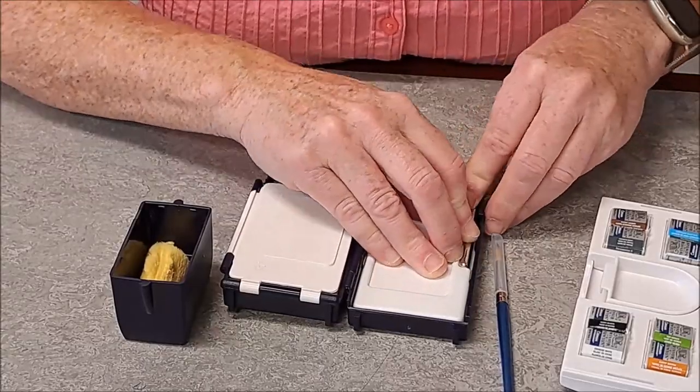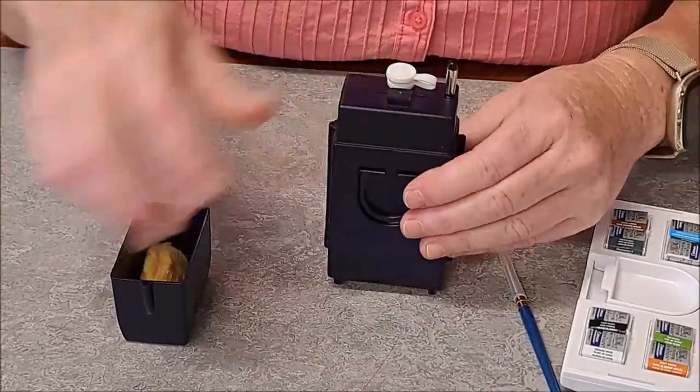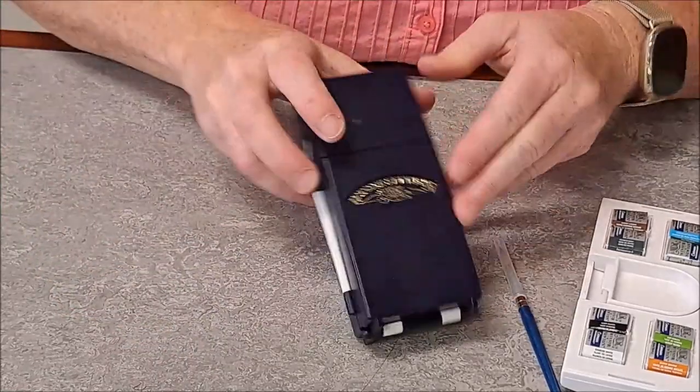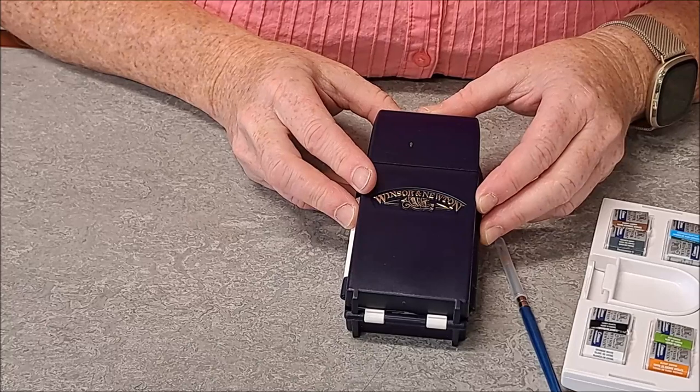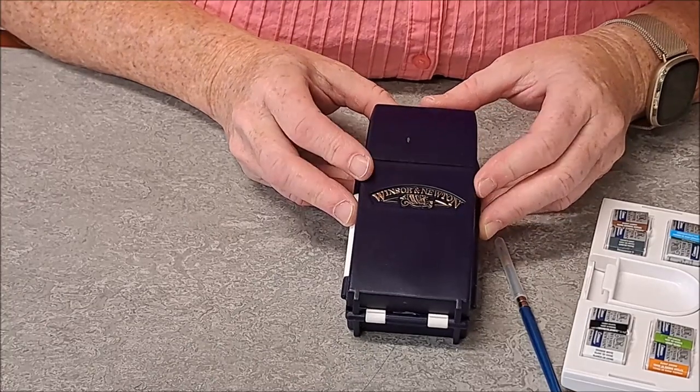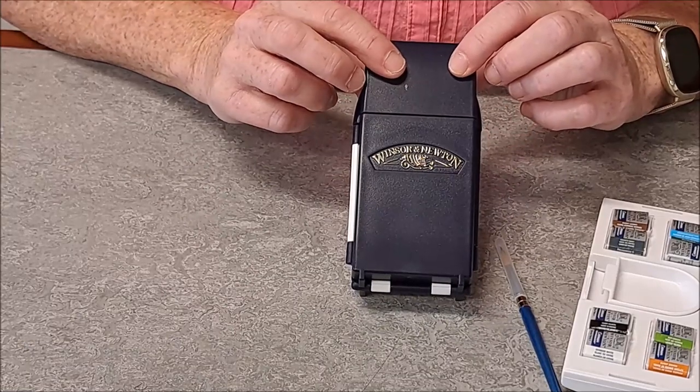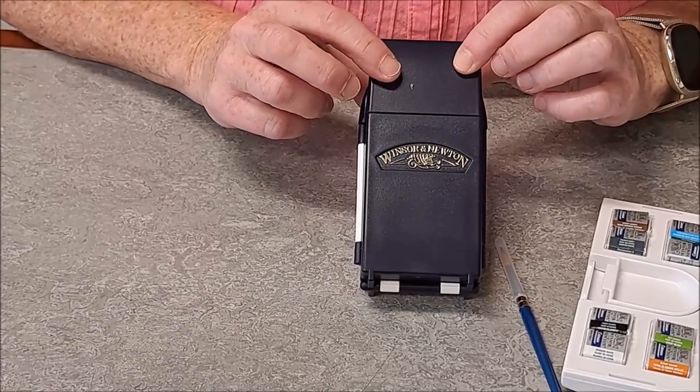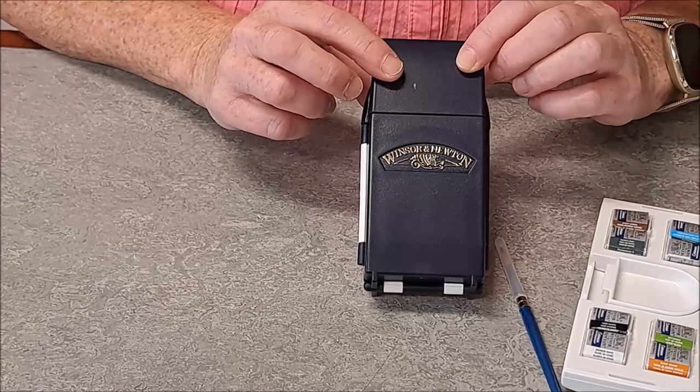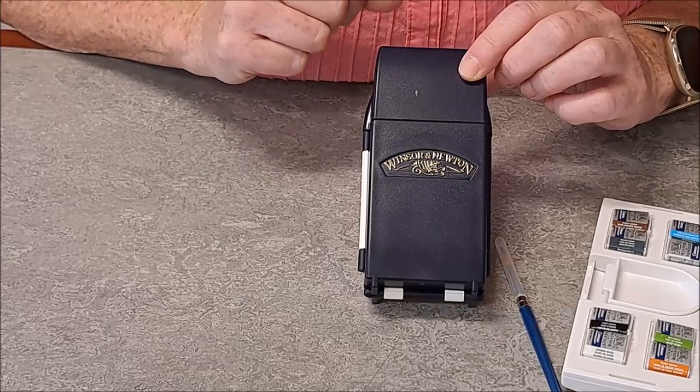So I think we have picked the Winsor Newton Cotman Pocket Field Set and then just purchasing two additional pan colors to go with it to make it a 14 color set. If you have any tips or tricks for beginner watercolors, especially those of us who are going to be out on the road traveling and trying to learn at the same time, by all means, drop them in the comments. Thanks very much.